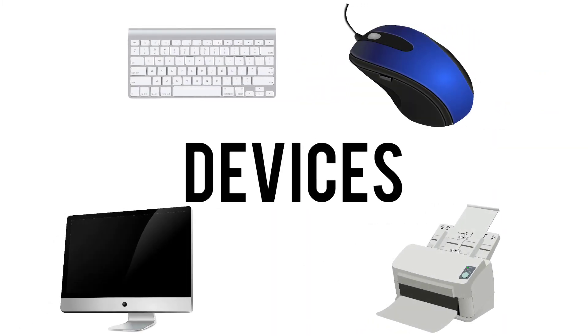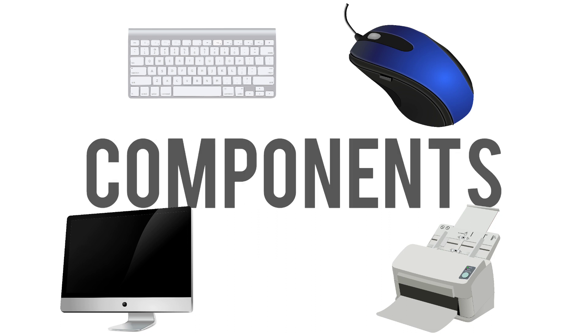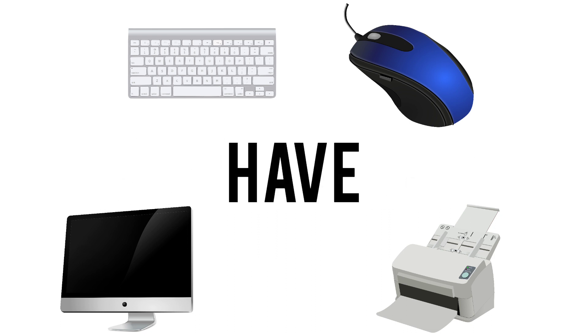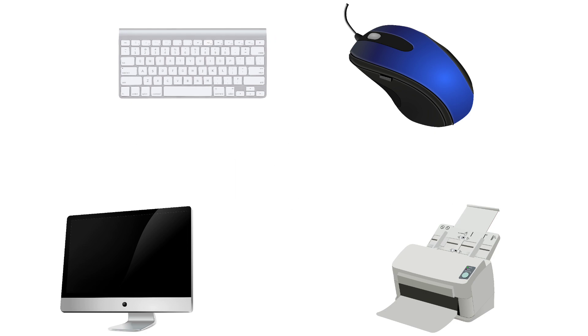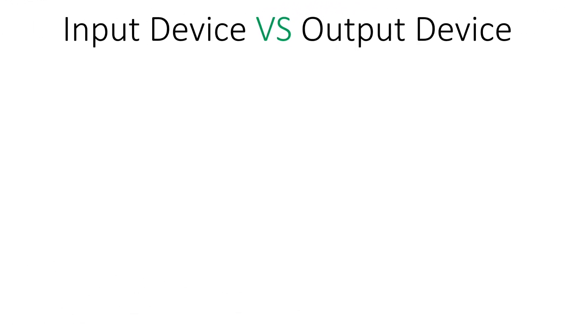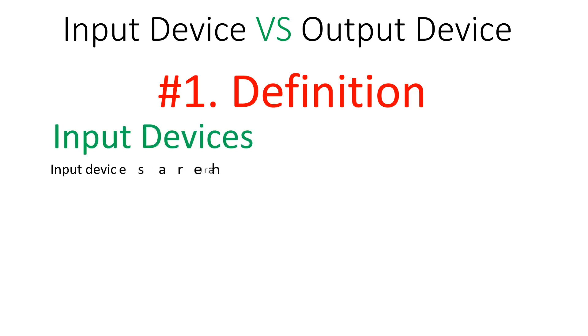Input and output devices are both computer hardware components; however, they perform specific tasks and have several differences between them. Hello and welcome everyone. Let's start with the definition of computer input and output devices.